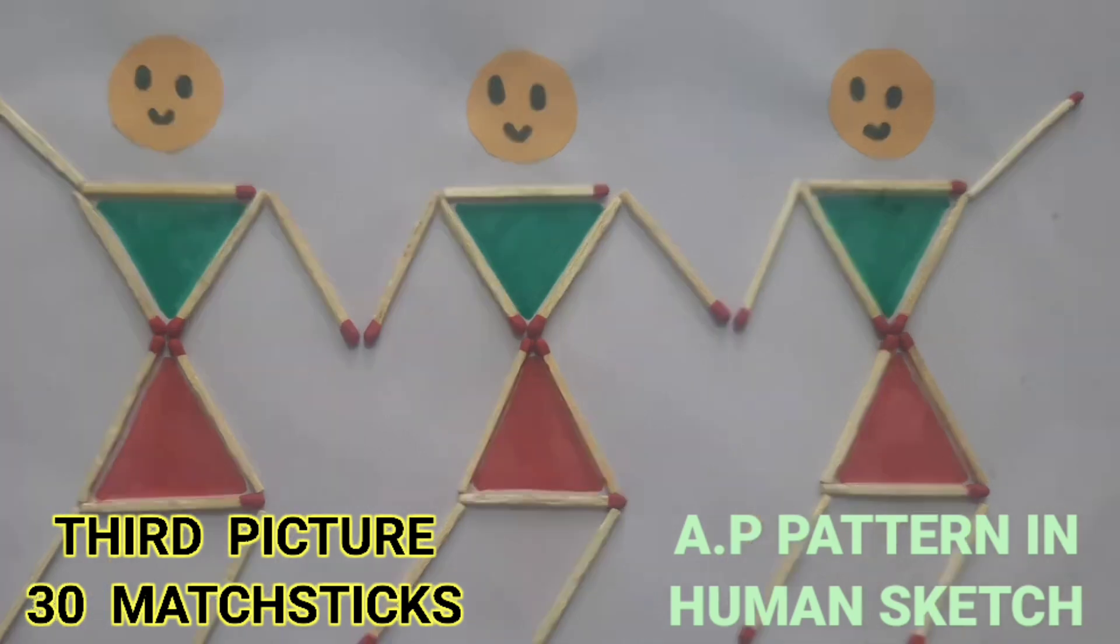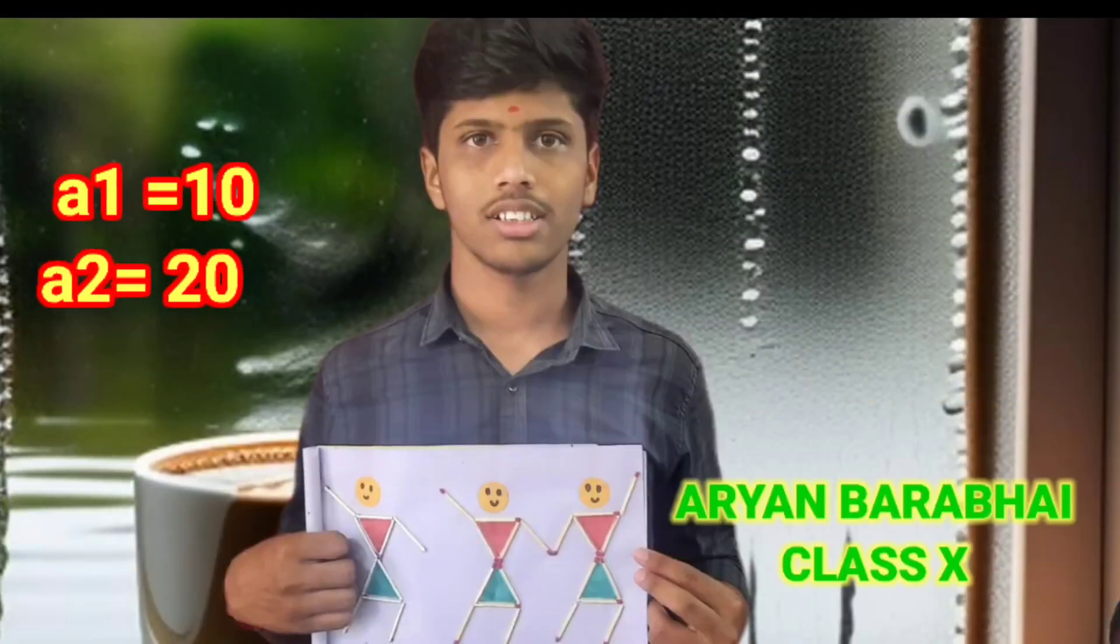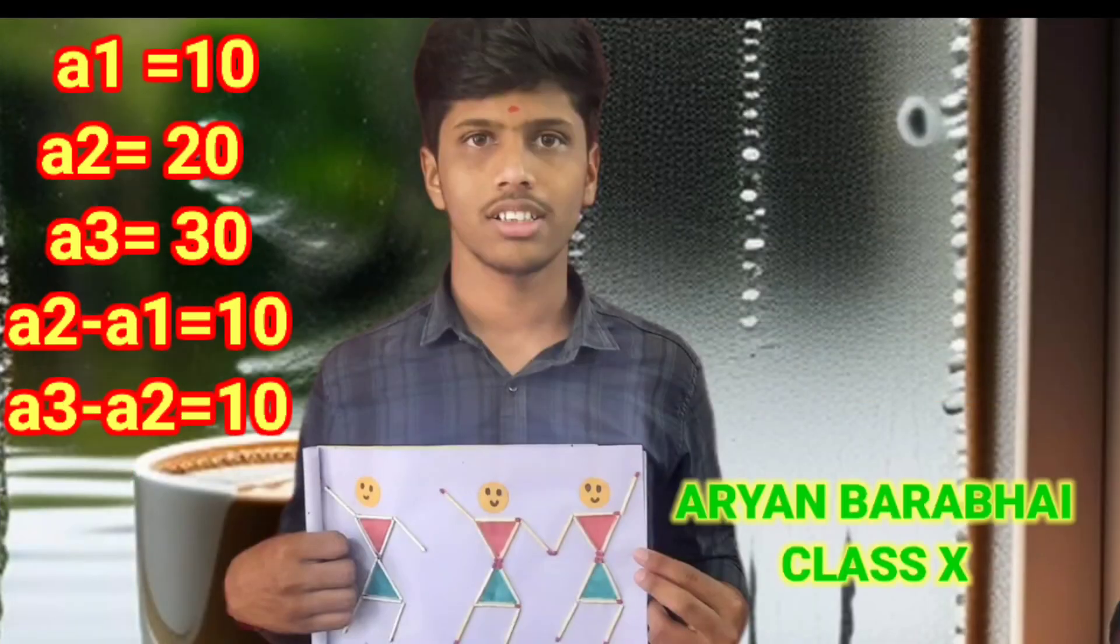Mathematically speaking, the first term is 10, second term is 20, and third term is 30. The difference between the two terms is 10, which is an arithmetic progression.